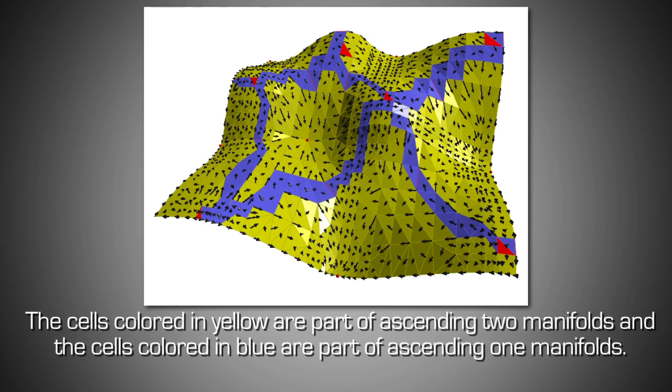The cells colored in yellow are a part of ascending two-manifolds, and the cells colored in blue are a part of ascending one-manifolds.